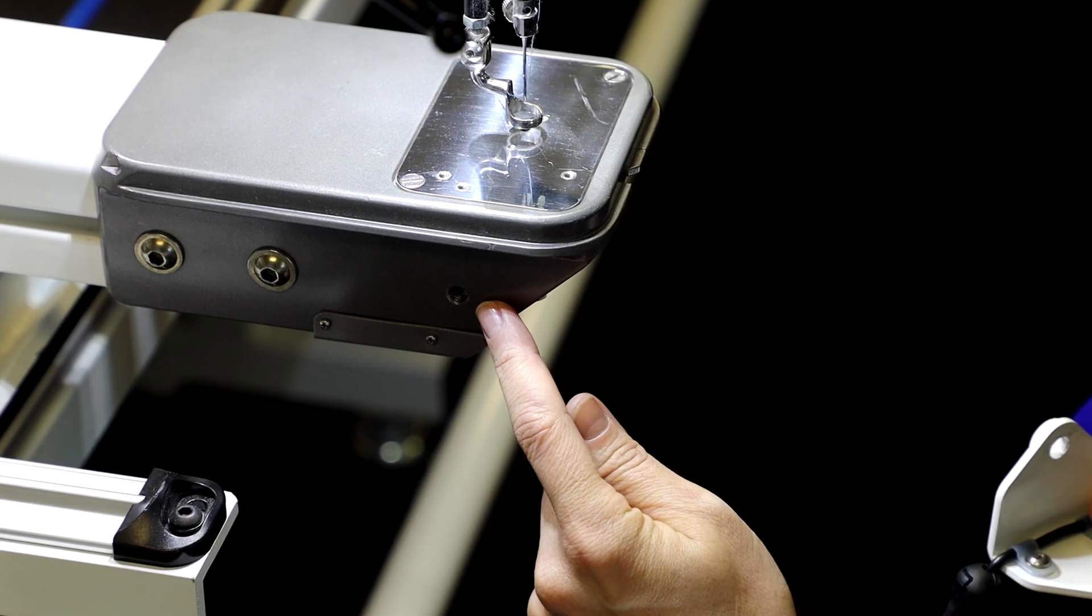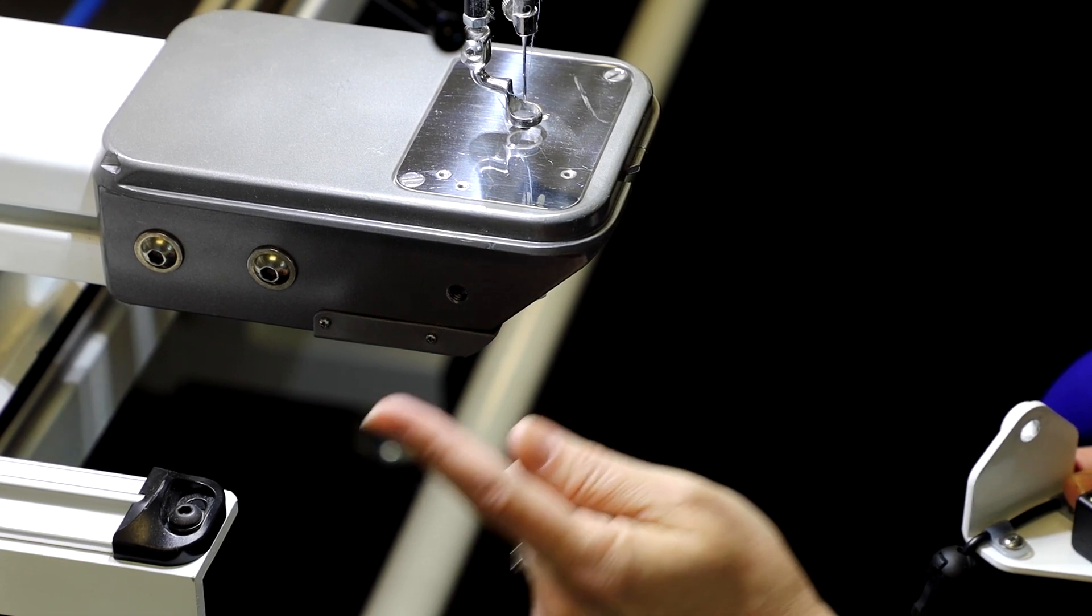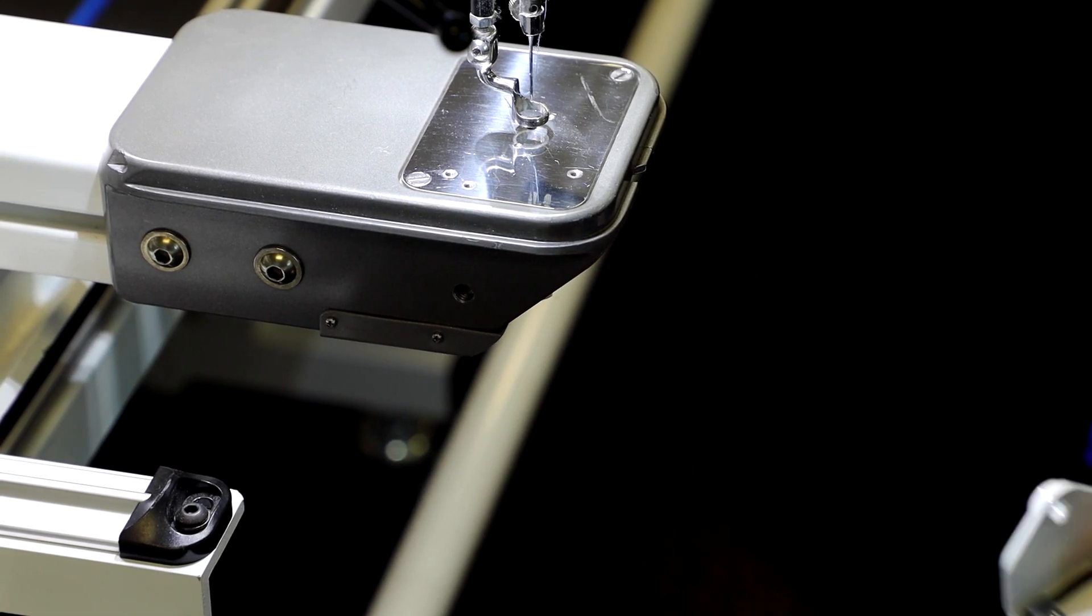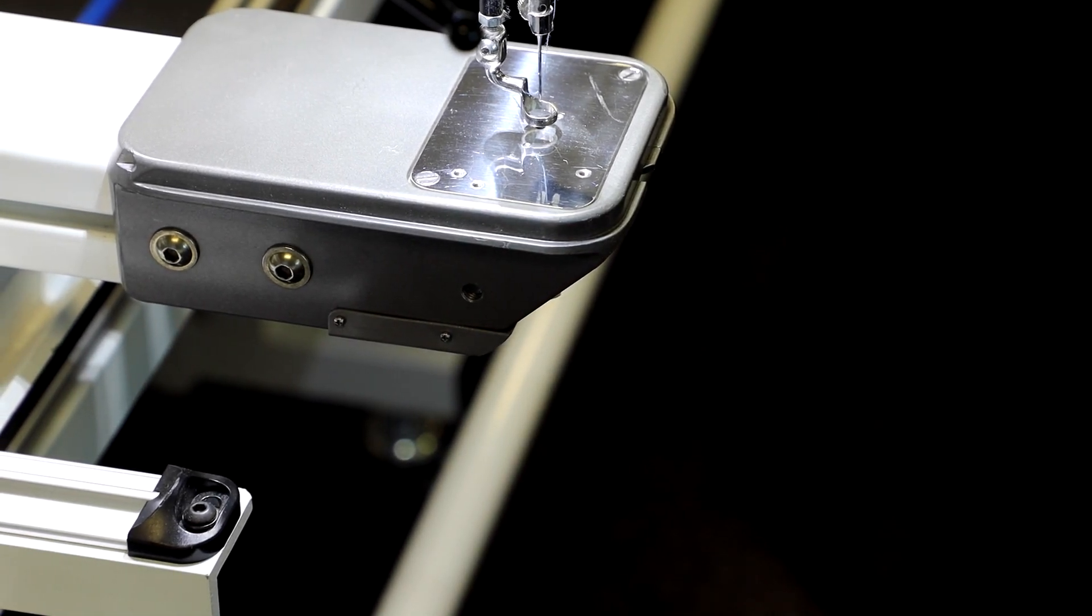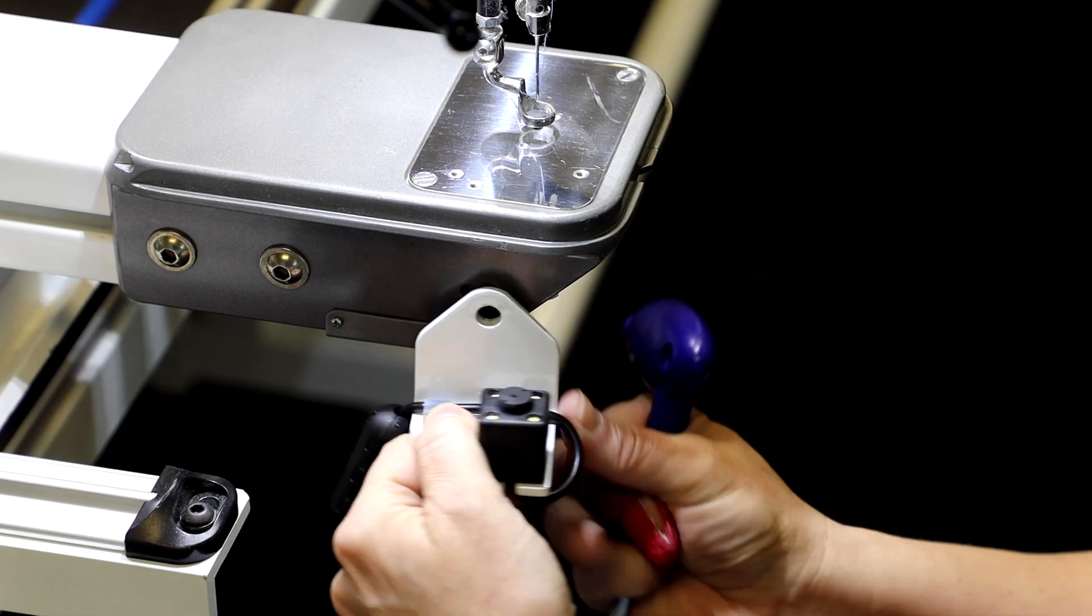First you'll need to remove the bolt from this slot right here if needed, if it's in there. This is on the left side of the machine when you're facing the machine.